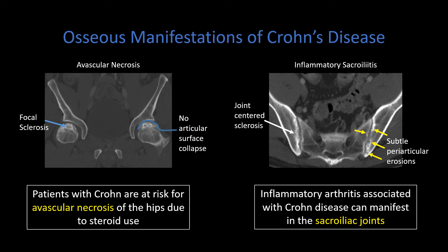Osseous manifestations — I can't emphasize this enough. Once you start looking for this on your Crohn patients, you are going to see it all the time. Crohn disease puts patients at risk for avascular necrosis, also known as osteonecrosis, of the femoral heads due to repeat or high-dose steroid use. When you see the classic serpiginous infarction within the femoral head, note not only whether avascular necrosis is present, but also whether there has been articular surface collapse. If it progresses to that point, the patient may require a hip arthroplasty due to secondary severe arthritis of the hips.